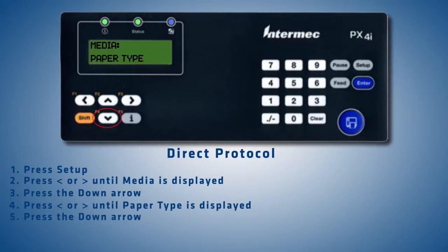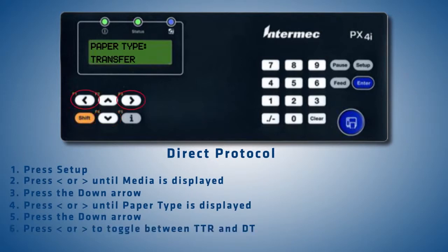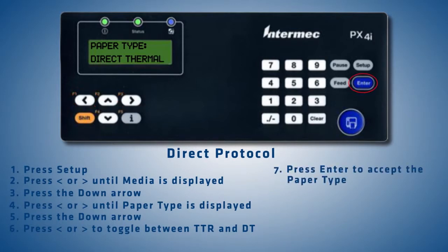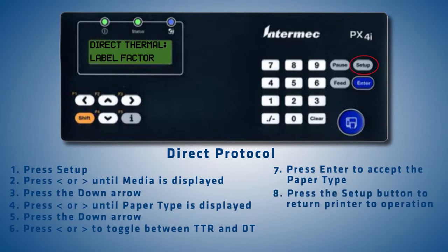Press the left or right arrow buttons until the Paper Type menu is displayed. Press the down arrow button to enter the Paper Type menu. Press the left or right arrow buttons to toggle between Thermal Transfer, TTR, and Direct Thermal, DT. When the desired Paper Type is displayed, press the Enter button. Press the Setup button to return the printer to operation.